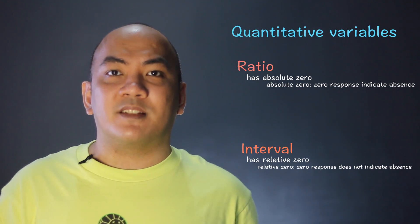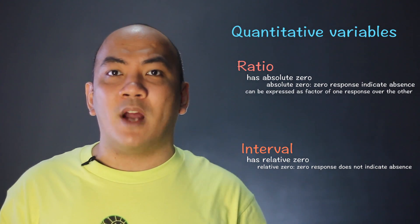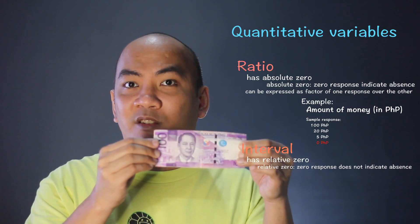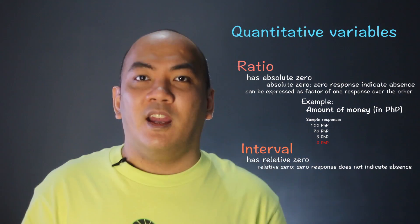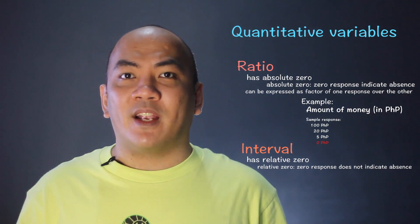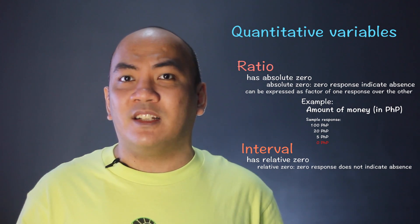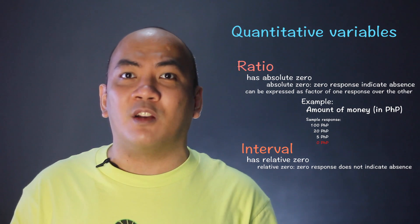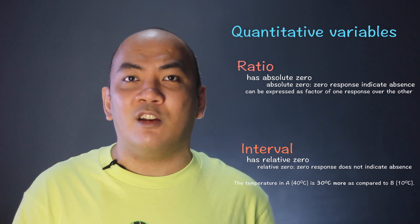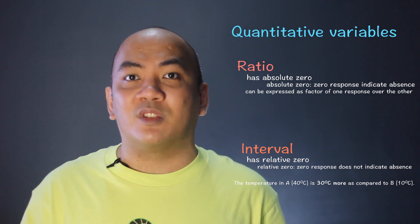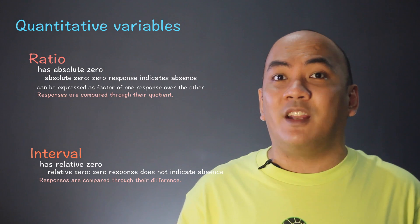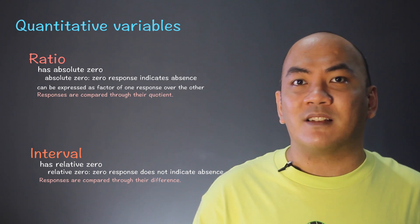Aside from absolute zero and relative zero, ratio can be expressed as a factor of one response to the other. For example, the amount of money is in ratio because 100 pesos is five times the value of 20 pesos, and 20 pesos is four times the value of 5 pesos. Whereas in interval, we cannot say that a location having a temperature of 40 degrees Celsius is four times the heat of a location where the temperature is 10 degrees Celsius. But we can say that the temperature is 30 degrees Celsius more at 40 degrees compared to 10 degrees Celsius. Just remember that in interval we may compare responses through their difference, while in ratio we can compare responses through their quotient.